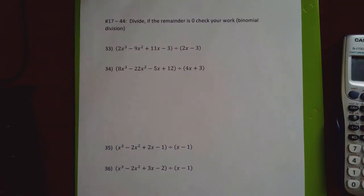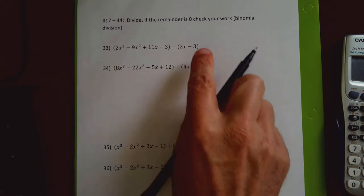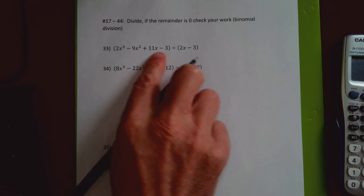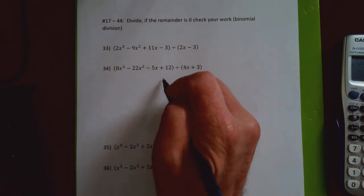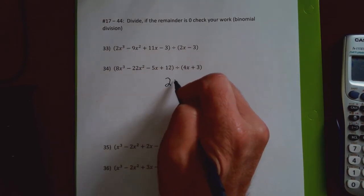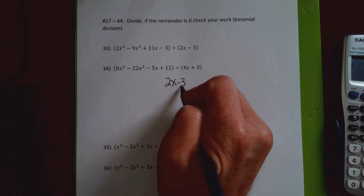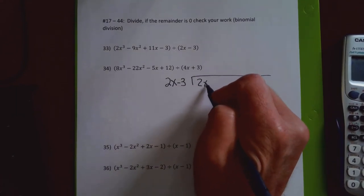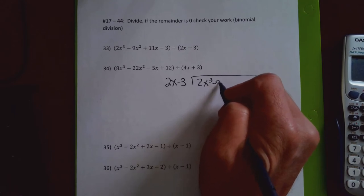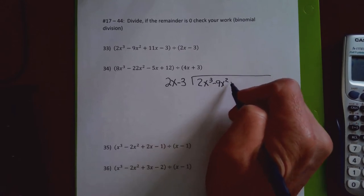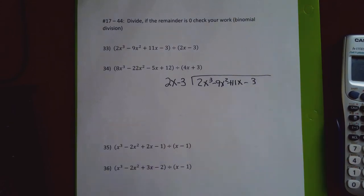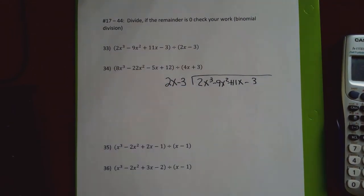We'll work on 33 next. I'm going to write 33 in its long division form. It's going to have an extra step because the left side is bigger. I'm going to take 2x minus 3 and put it in front of the division bar, and 2x cubed minus 9x squared plus 11x minus 3 goes underneath. This is going to be a three-step problem because there are four terms here, as opposed to three.